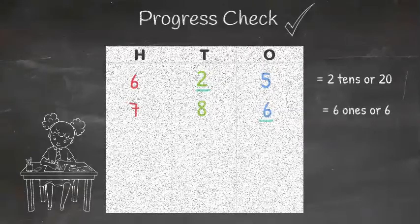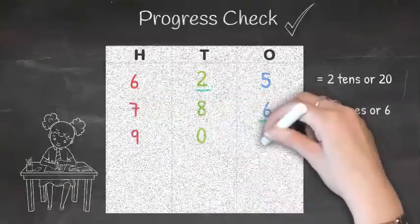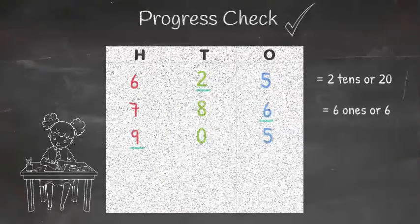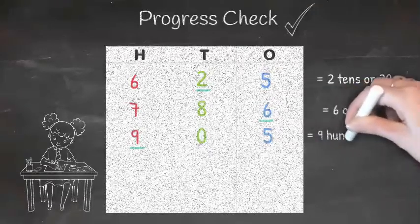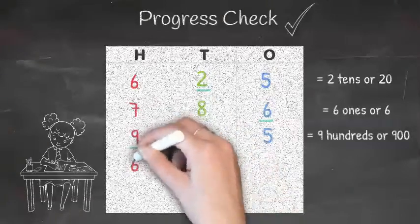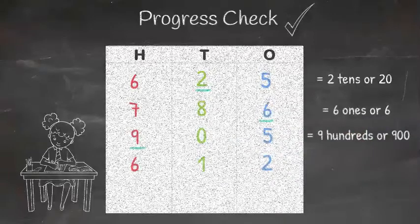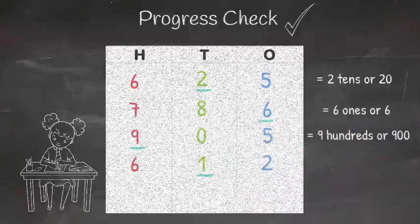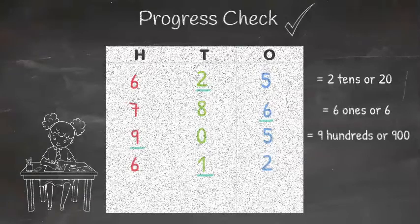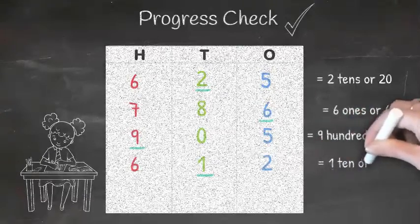The next number was 905, and we underlined the number 9. It's the same process again, identifying which column the 9 is in. And that's correct. It's in the hundreds column. So, that 9 is equal to 900. The next number we gave you was 612, and we underlined the 1. As you can see, it's placed in the tens column. So, that 1 is actually equal to 1 ten or 10.